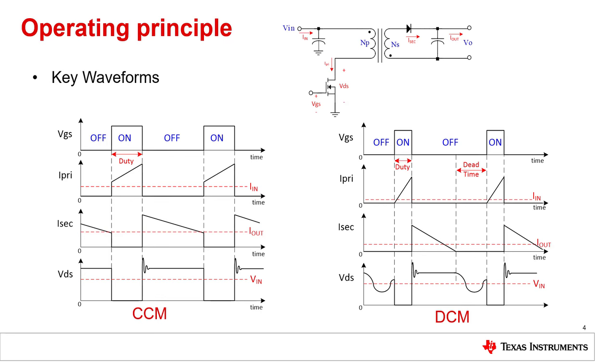So in continuous conduction mode, when the switch is on, the input voltage is applied across the primary side of the transformer. The current in this winding rises. At the same time, the voltage on the secondary side of the transformer is negative, so the diode blocks current and the full load current is coming out of the output capacitor.